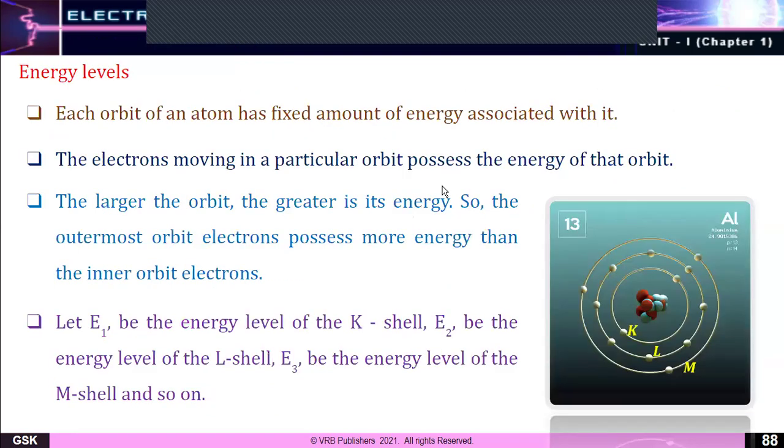Now coming to energy levels. Each orbit of an atom has a particular amount of energy associated with it. The electrons moving in a particular orbit possess the energy of that orbit. The larger the orbit, the greater is the energy. So the outermost orbit electrons possess more energy than the inner orbital electrons.